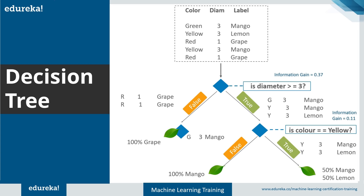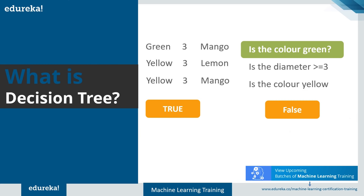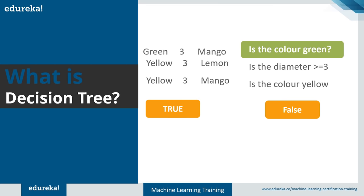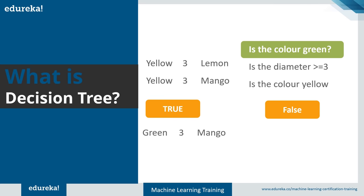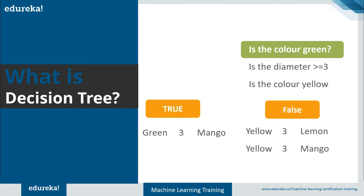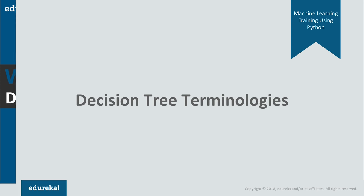To create a decision tree, you identify questions to ask based on your dataset — for example, 'Is the color green?', 'Is the diameter greater than or equal to 3?', or 'Is the color yellow?' If the color is green, the data splits: green mangoes go to the true branch, while lemons and non-green mangoes go to the false branch.